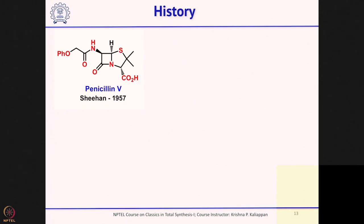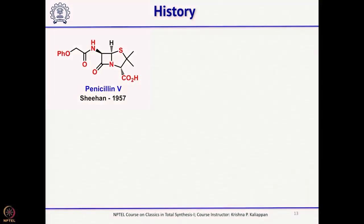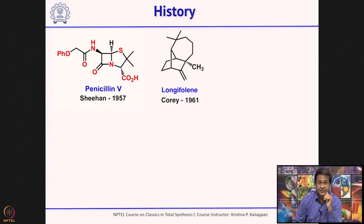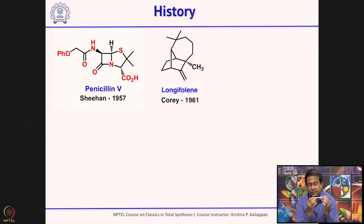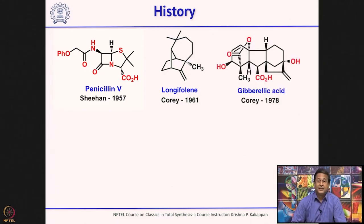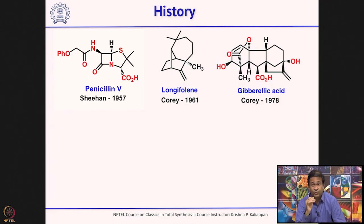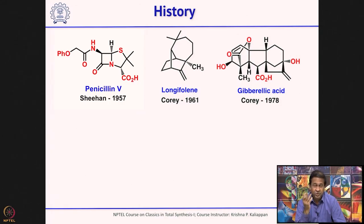In 1957, penicillin — though isolated two decades earlier — was synthesized; its synthesis was very difficult particularly because of the highly labile four-membered beta-lactam ring. Then in 1961, another legend in total synthesis, Corey, started reporting syntheses of several complex natural products, including longifolene, followed by his synthesis of gibberellic acid — a very difficult synthesis deserving the highest appreciation. Around the same time, Woodward also made vitamin B12, a complex molecule people never thought could be synthesized.